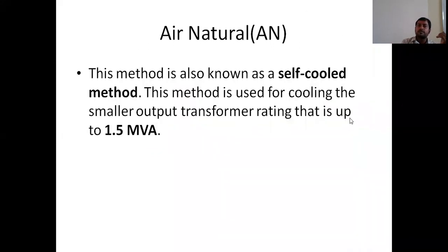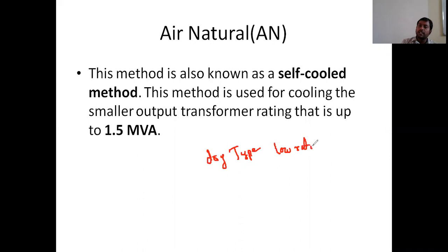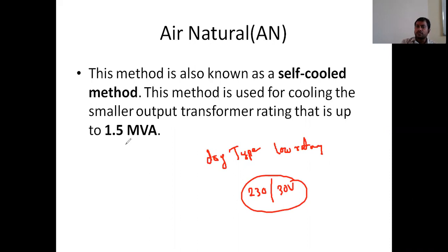The first method is air natural. Air natural is for dry type transformers, used for low rating transformers — for example, 230 by 30 volts transformer, low voltage transformers. This is for 1.5 kVA and is a self-cooled method.